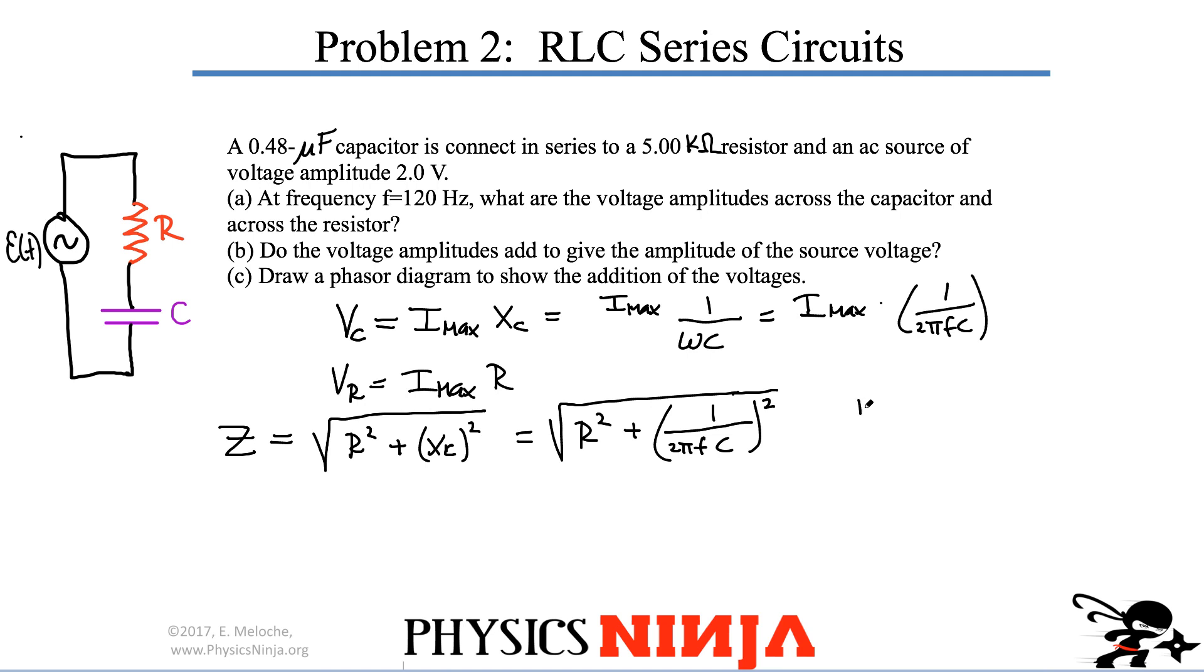At the end of the day, all you're looking for is Imax. If I know Imax, I can then calculate what the voltage across the capacitor is, and what the voltage across the resistor is. So Imax is the voltage across the source, the maximum, which is 2 divided by my impedance. You substitute in all the numbers here. I think you get 3.5 times 10 to the minus 4 amps. That's our maximum current.